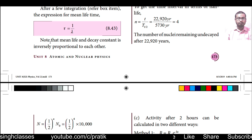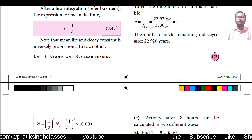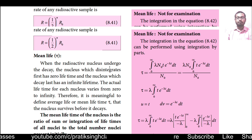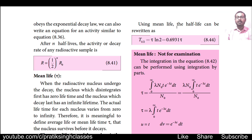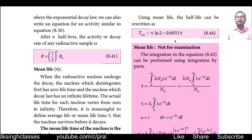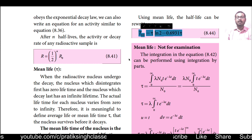Note that mean life and decay constant are inversely proportional to each other — higher the decay constant, lesser the mean life. Using mean life, the half life can be rewritten as T½ = τ·ln2 = 0.6931τ. This is the relationship between mean life and half life of any radioactive element.